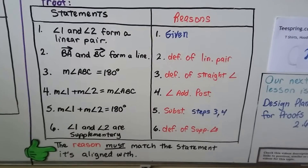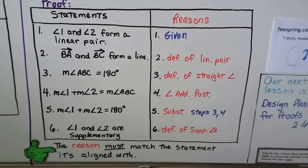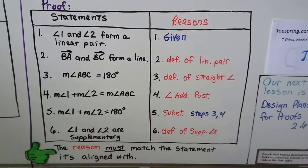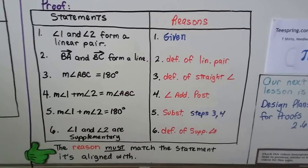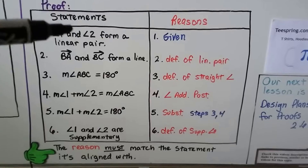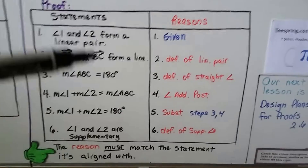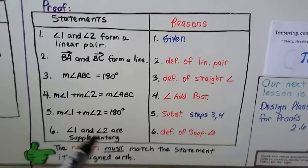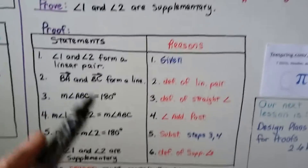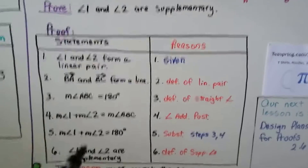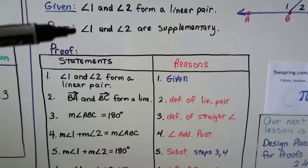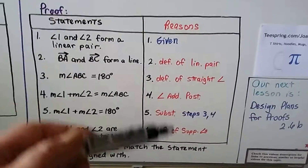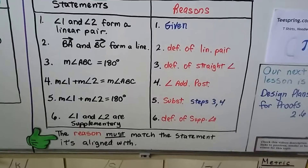Our sixth statement is angle 1 and angle 2 are supplementary. Our reason is the definition of supplementary angles. So we started at the top and, using logic precisely, we got down to what we were supposed to prove, using these definitions, postulates, and properties. The reason must match the statement it's aligned with.